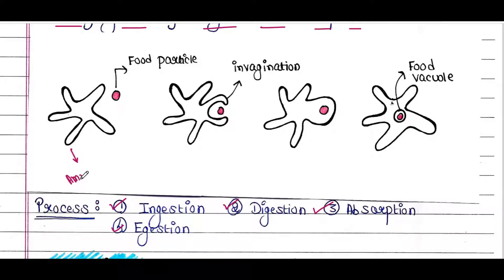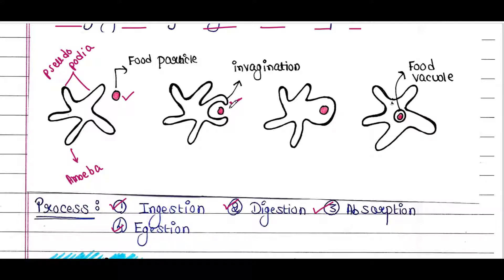Here we can see the amoeba, which is one type of protozoa. These are the pseudopodia of amoeba, and here it has the food particle. What it does is it first invaginates its pseudopodia — turning them and trying to engulf the food particle — and here it is successful in engulfing the food particle.